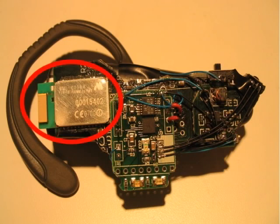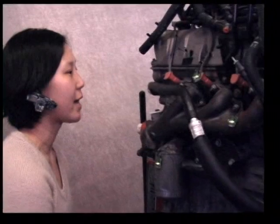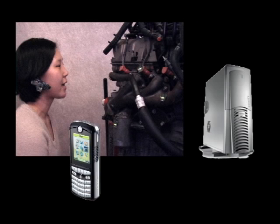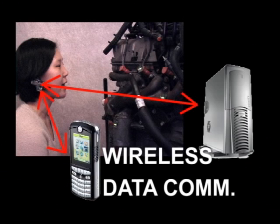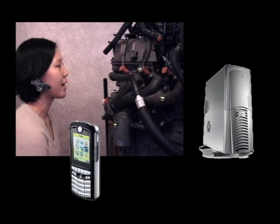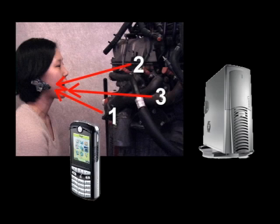The headset also has a Bluetooth radio that allows the incoming identifiers and outgoing control commands to be transmitted to an application server on a nearby PC or mobile phone. The application server estimates the focus of the user's attention by noting which beacons are currently in the user's visual field. The system can actively direct a user's attention to any beacon within their visual field by triggering a blinking sequence on that particular beacon.